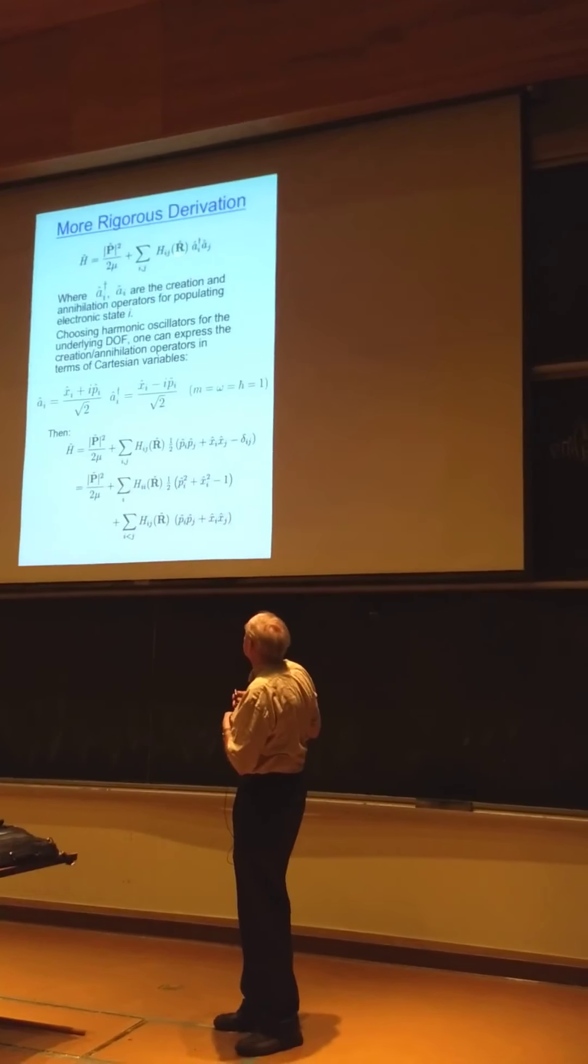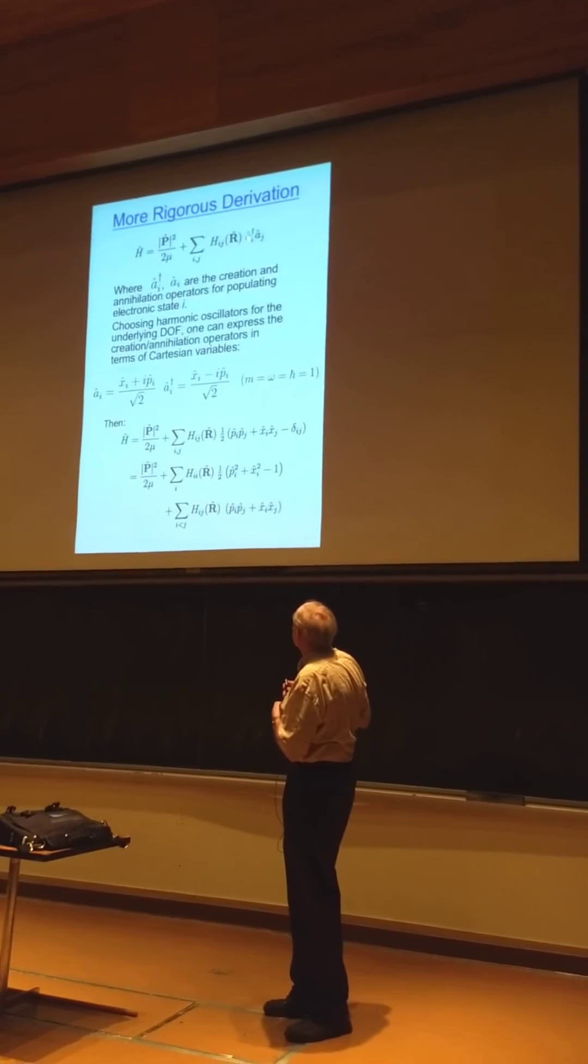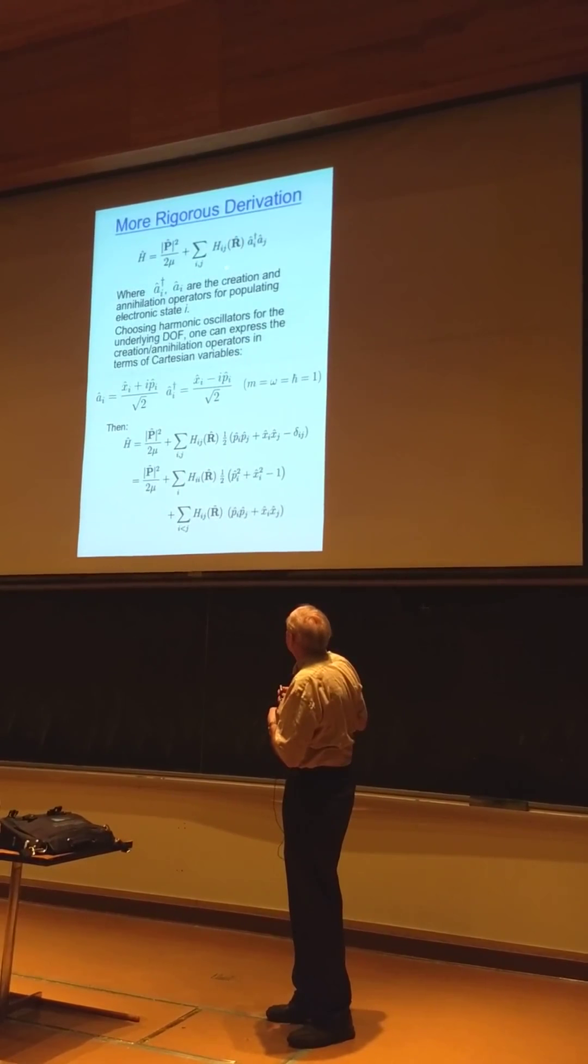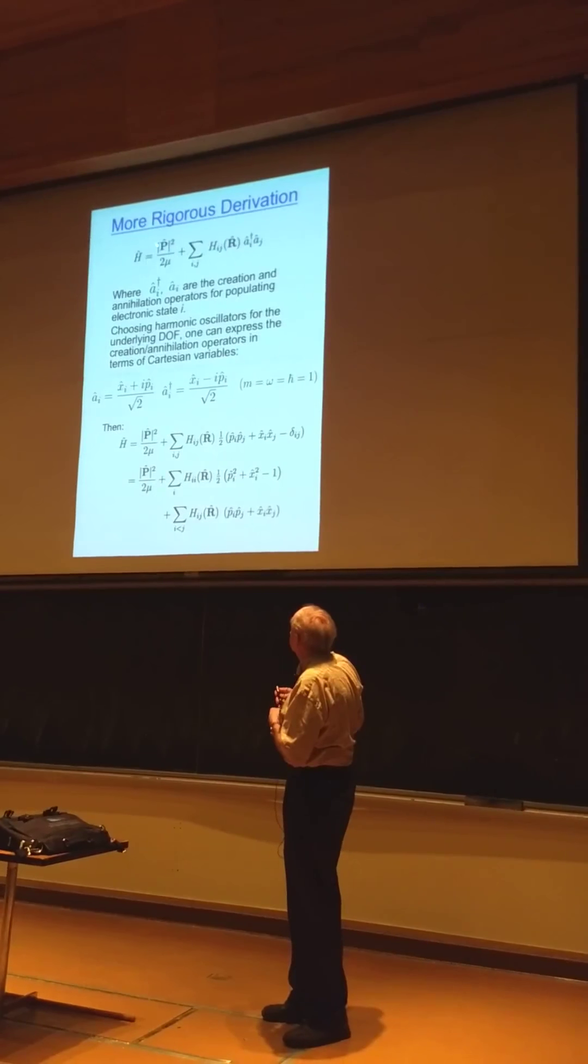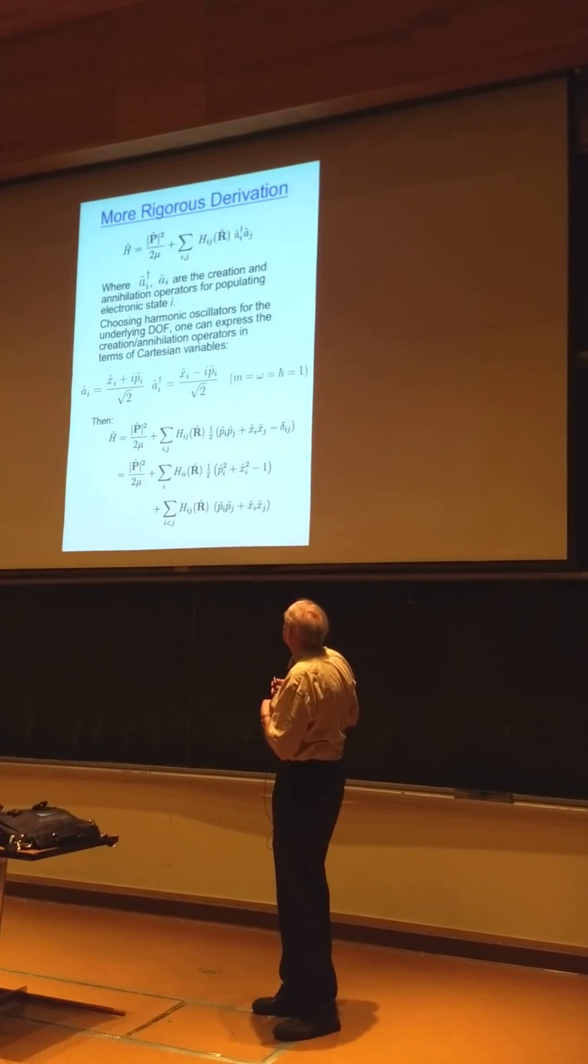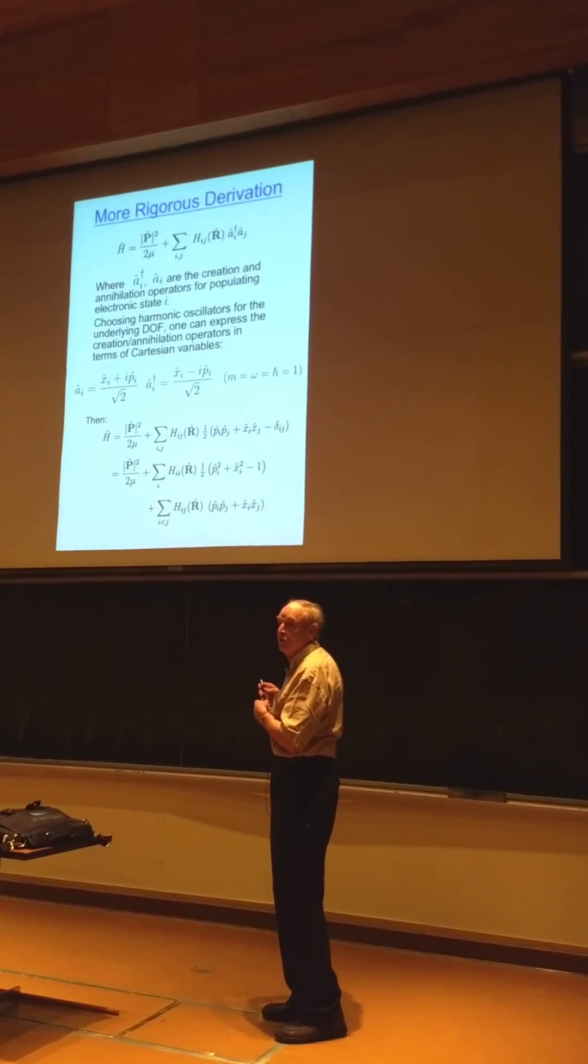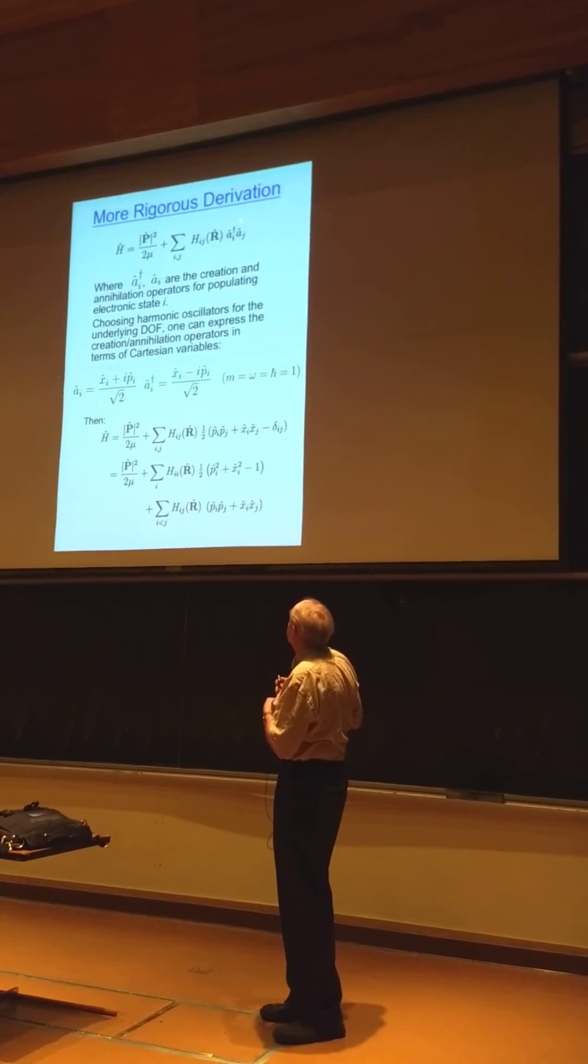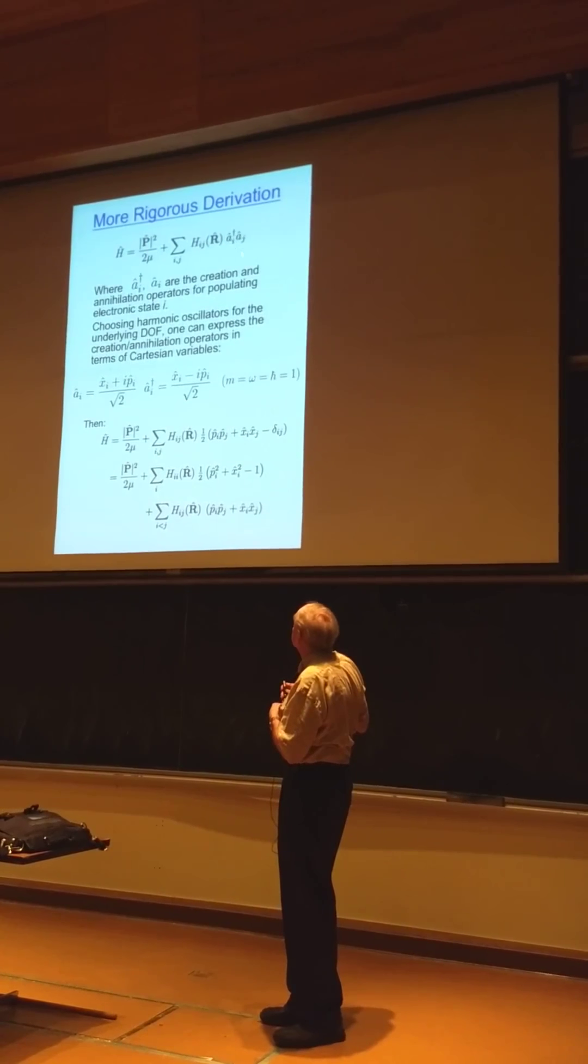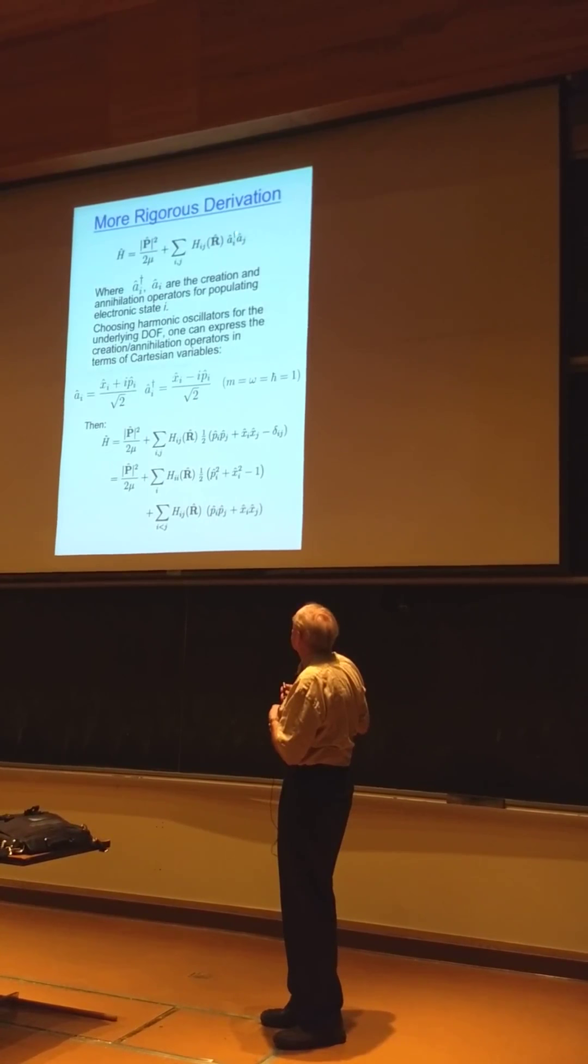Suppose we start with a quantum mechanical Hamiltonian operator. Again, given the diabatic electronic matrix, this is the nuclear momentum operator. These are creation annihilation operators. This is a very simple second quantized version. They create and destroy population in electronic states I and J.